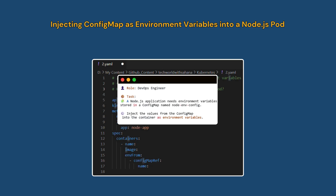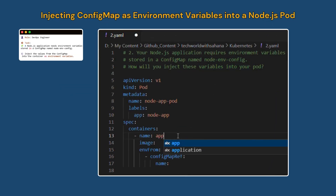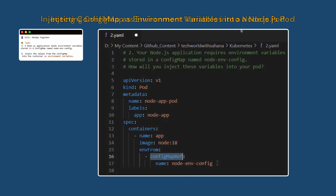As a DevOps engineer, your Node.js application requires environment variables stored in a ConfigMap named 'node-environment-config'. How will you inject these variables into your pod? First, create a pod and define a container — let's say the container name is 'app' using the official Node.js image, for example version 18. Since the application needs environment variables stored in a ConfigMap called 'node-env-config', we inject them directly into the container using an 'envFrom' field, referencing the ConfigMap by its name using 'configMapRef'. This tells Kubernetes to load all key-value pairs from the ConfigMap as environment variables inside the container.